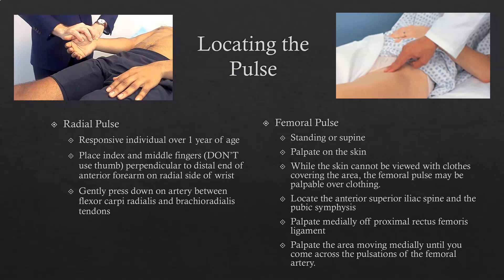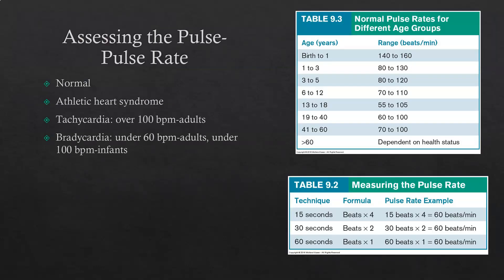You'll practice finding both pulses in lab. Pulse rate is highly dependent on age. To get the pulse rate, palpate and count heartbeats, with 30 seconds multiplied by two being the recommended method. Shorter intervals allow for more irregularities, while counting a full 60 seconds makes it harder to keep track, so 30 seconds is the recommended standard.